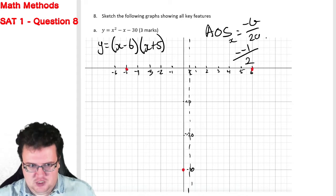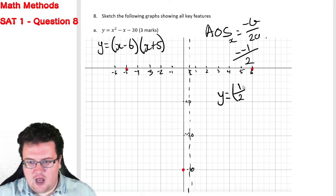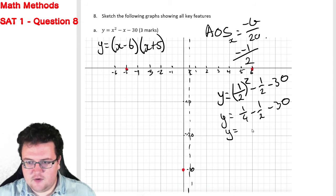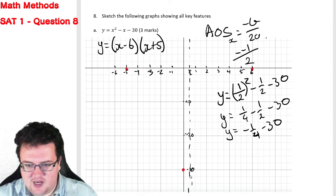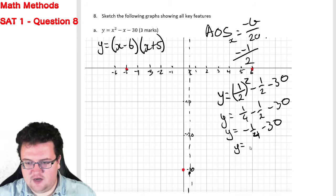Therefore, y is going to be equal to a half squared minus a half minus 30. So y is equal to a quarter minus a half minus 30, which is therefore going to be y equals, so that's a quarter minus a half is going to be a negative a quarter minus 30, which means it's going to be about 3.25. Sorry, negative 30.25.